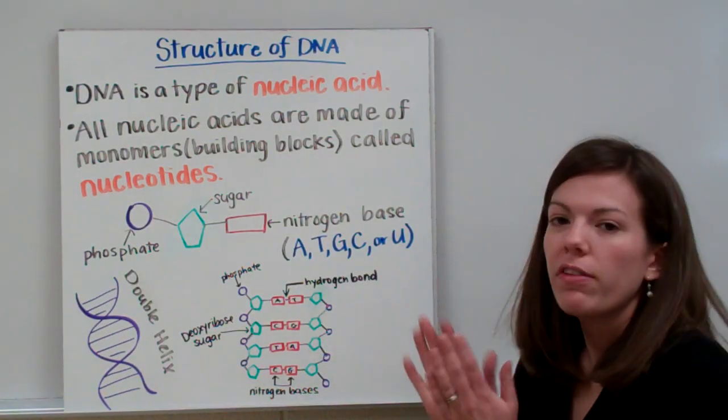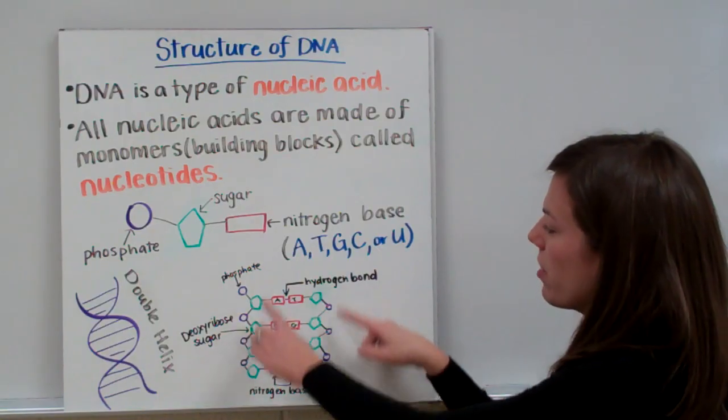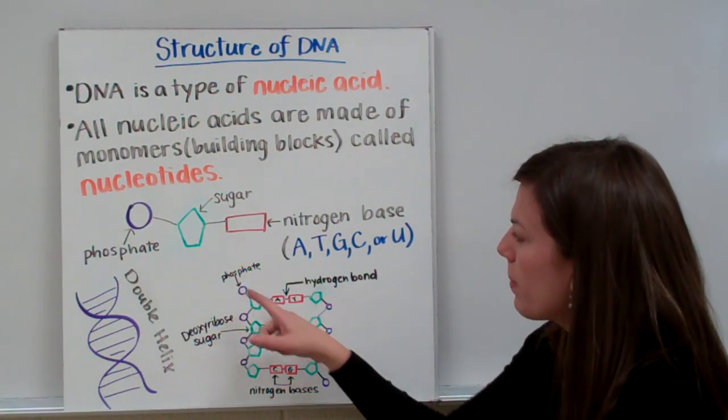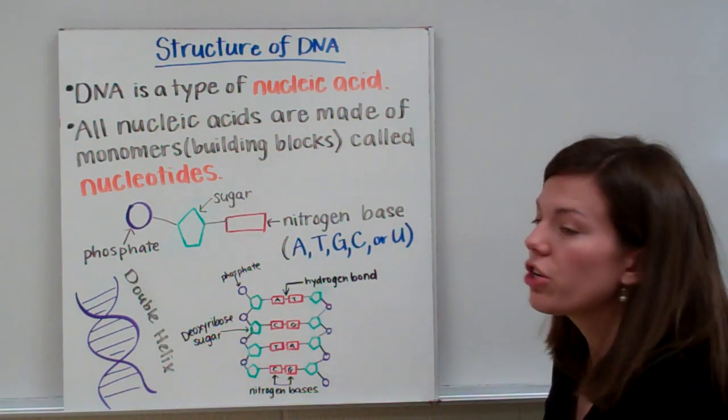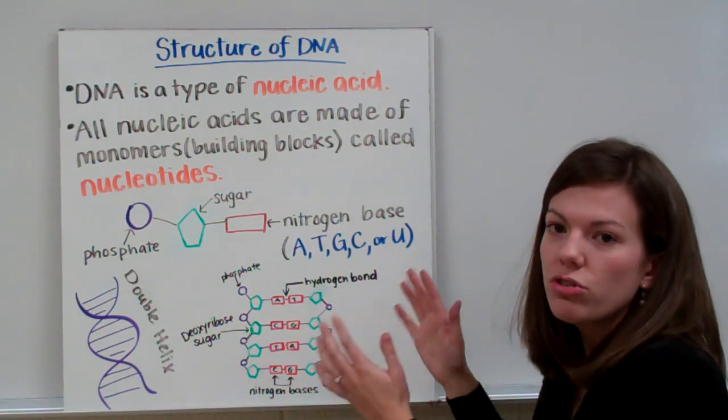Our rungs of the ladder are made of the purple and green structures. Remember, the purple is a phosphate and the green is a sugar. We have purple and green on both sides because there's two strands hooked together.